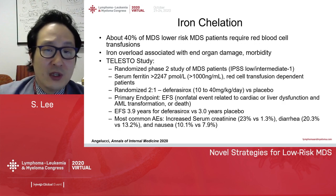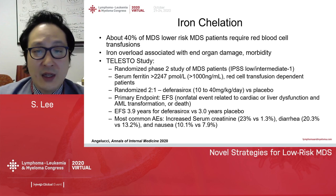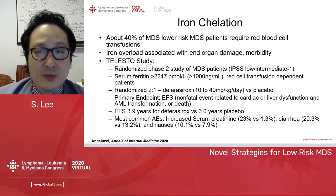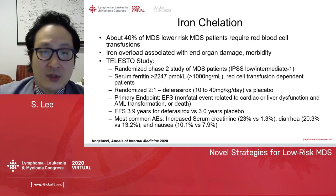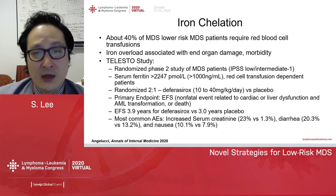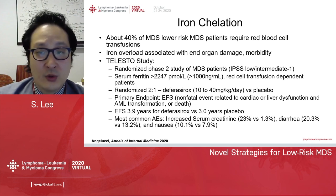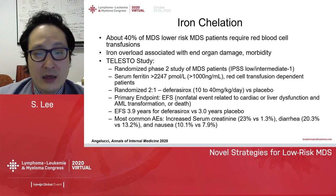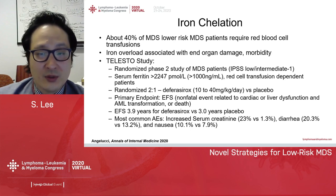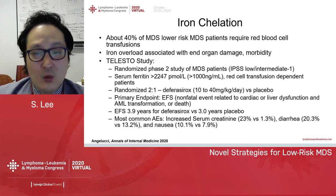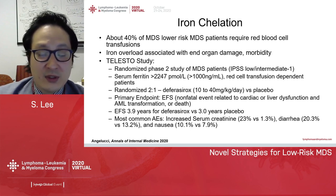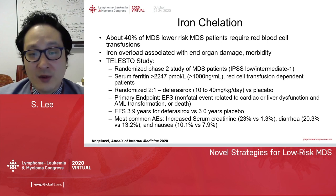About 40% of low-risk MDS patients require red blood cell transfusions. Red blood cell transfusions can lead to iron overload, and iron overload has been associated with end-organ damage, including hepatic, cardiac, and endocrine dysfunctions. Retrospective studies have suggested possible benefits with iron chelation.